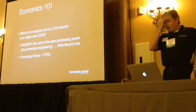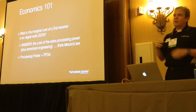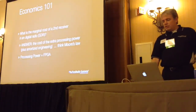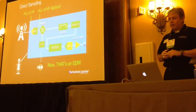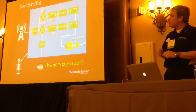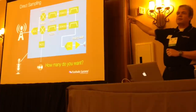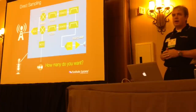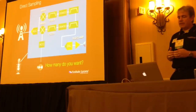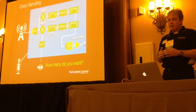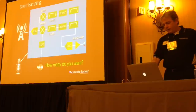In an analog radio, adding a second receiver means buying all those analog components again. But in a direct digital direct-sampling radio, you just stack another receiver on top in software and add as many as you want, provided you have the processing power. There are a whole lot of things you can do with this radio that you can't do with a normal radio.